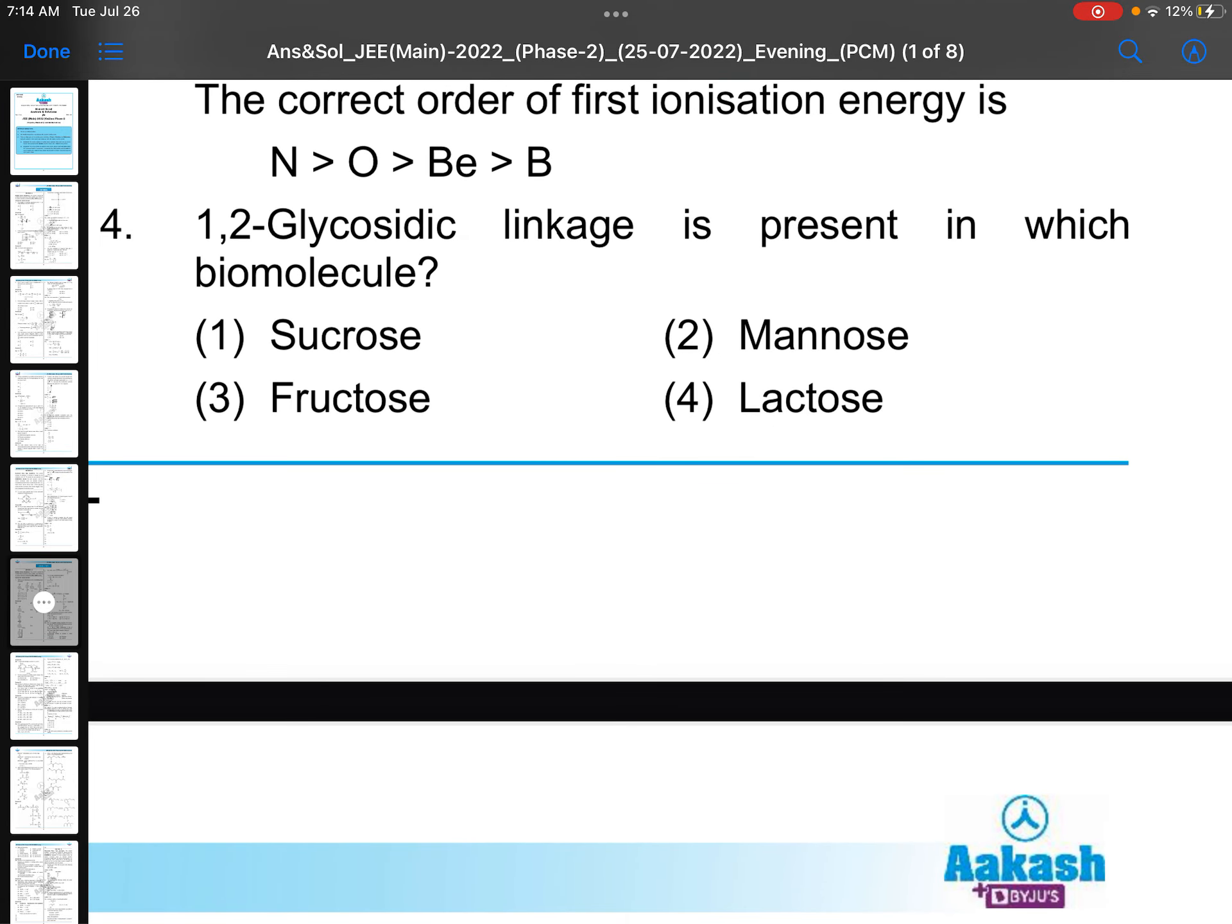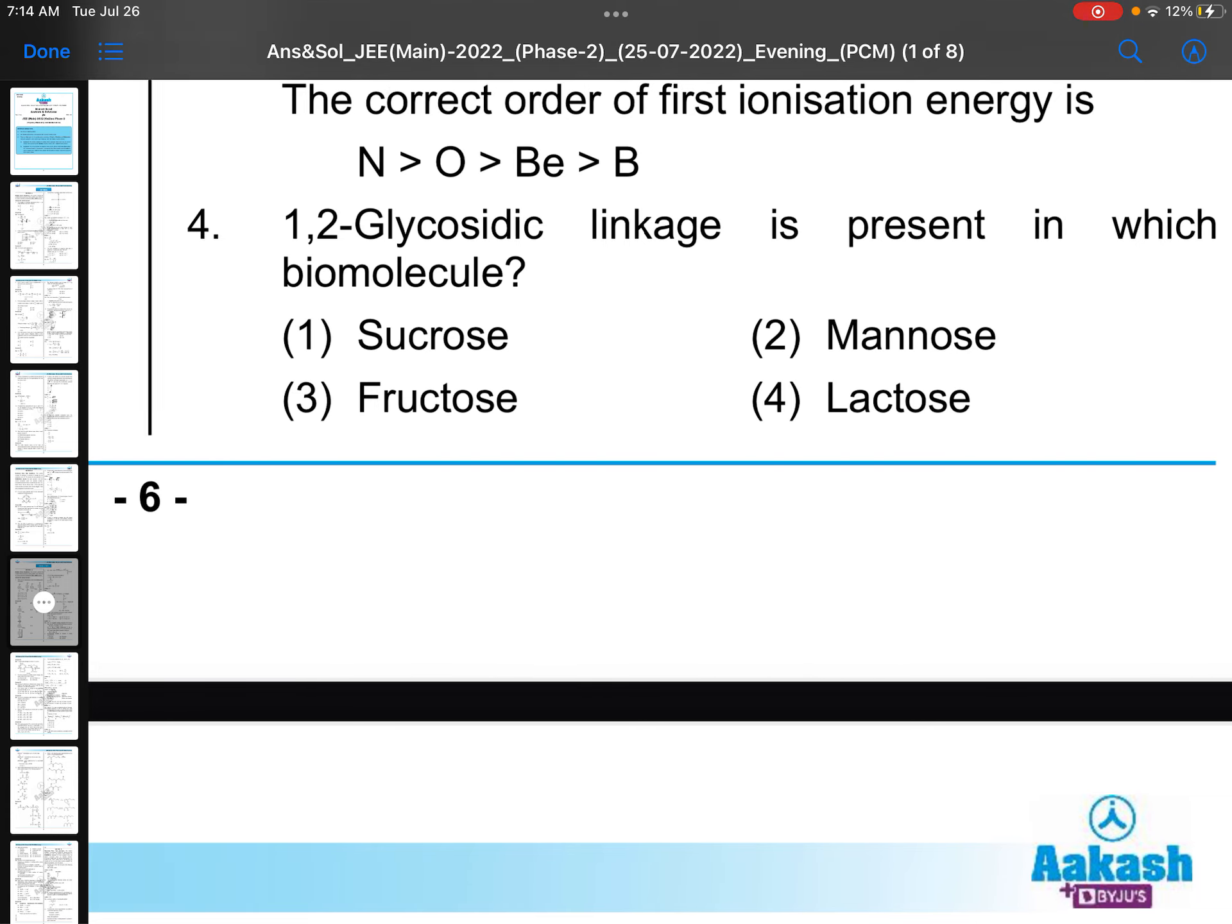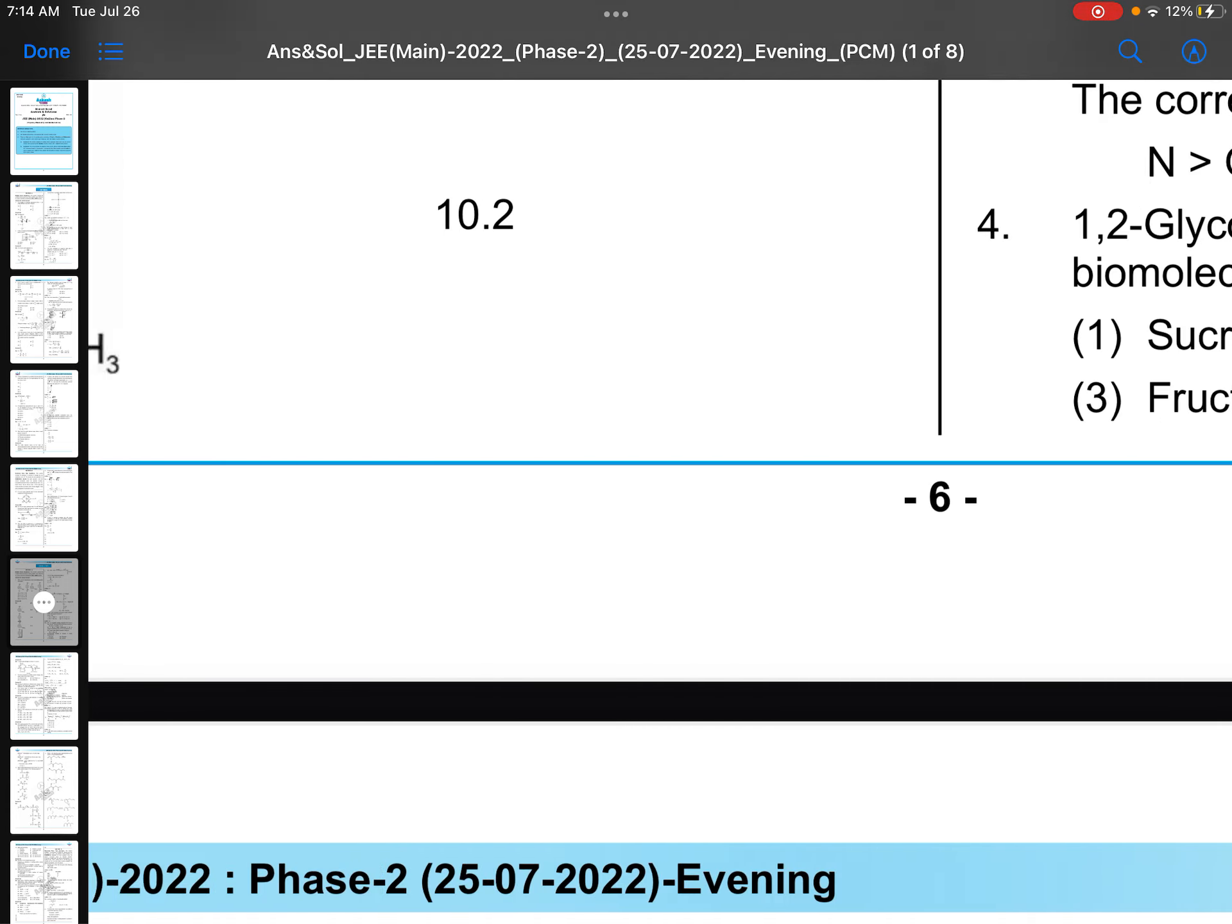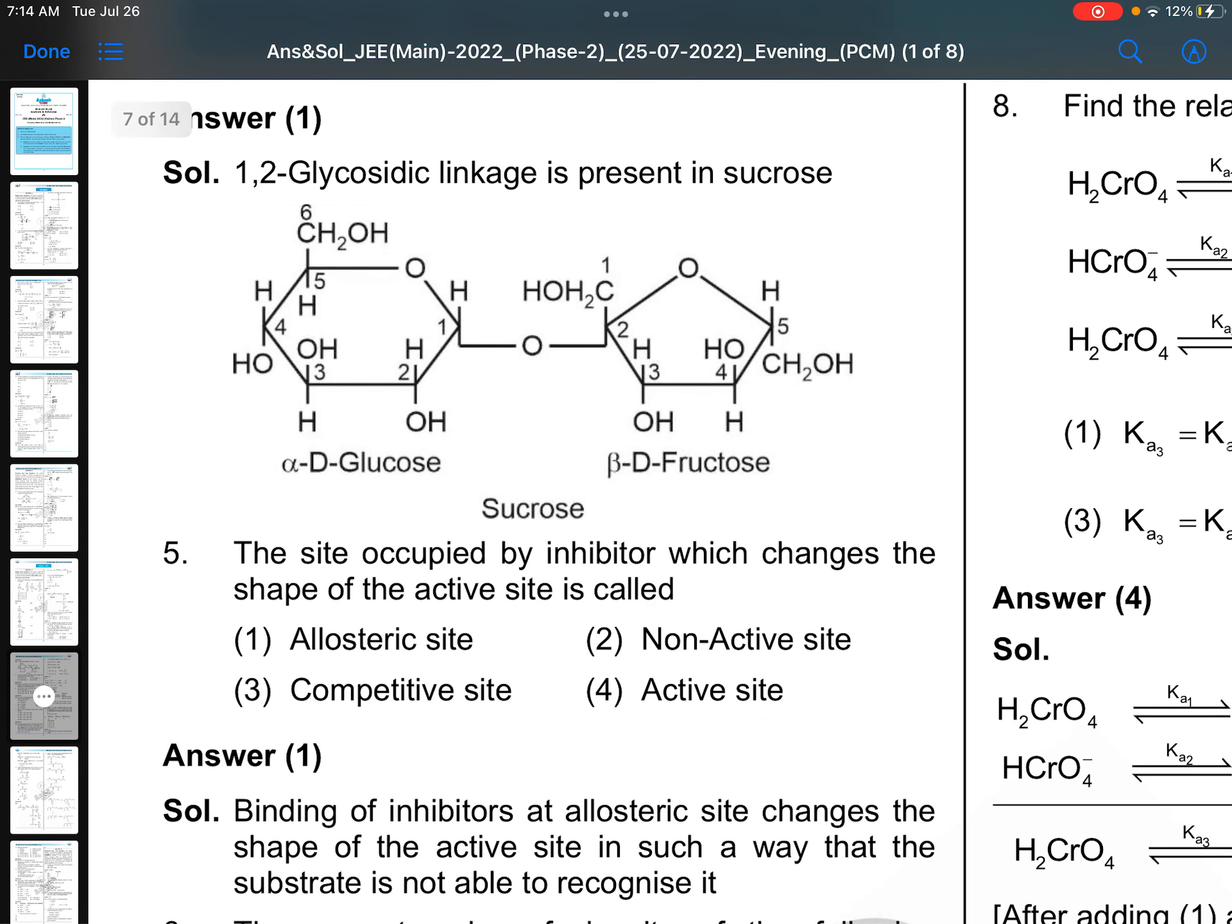1-2 glycosidic linkage is present in which biomolecule? When you are looking at this paper, try to remember these kind of questions. 1-2 glycosidic linkage is present in sucrose. No logic. Even if you want some logic, you need to remember this structure.